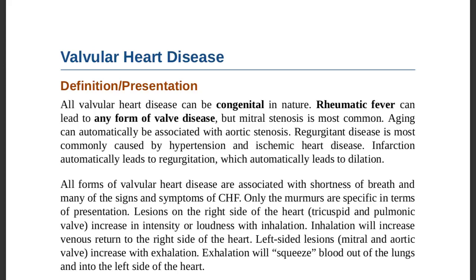Aging is associated with aortic stenosis — with advancing age, sclerosis may occur within the aorta. Regurgitant disease, meaning backward flow of blood, is most commonly caused by hypertension. Ischemic heart disease is another key cause. Ischemia, if irreversible, converts to infarction, which leads to regurgitation, which leads to dilatation — so they are all interconnected: ischemia → infarction → regurgitation → dilated cardiomyopathy.